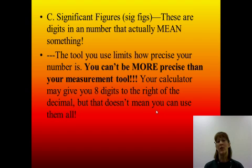Letter C, significant figures or sig figs. These are digits in the number that actually mean something. And it goes back to the fact that our numbers are actually measurements. And you can't get carried away with seven or eight digits to the right of the decimal when, say, the ruler that you're using, you can only do two digits to the right of the decimal with it. You are limited to how many digits you can carry it out to the right of the decimal by the tool that you're using. So the tool you use limits how precise your number is. You can't be more precise than your measurement tool.